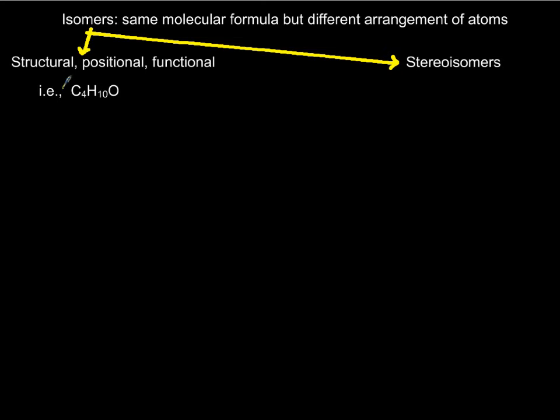To practice isomers, I'm going to break them into two categories. One is structural, which could also be positional and functional. I give you one example we dissect, and the second category is stereoisomers, which will go on the next slides.